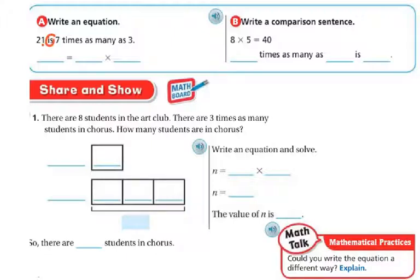The next one says to write an equation. 21 is, whenever I see the word is, I know it's equal. So 21 is, or equals, 7 times as many 3's. So 7, the word times is right there, as many 3's. So this is 21 equals 7 times 3.